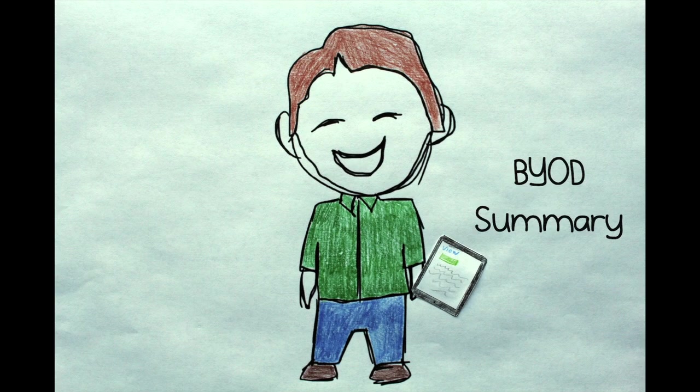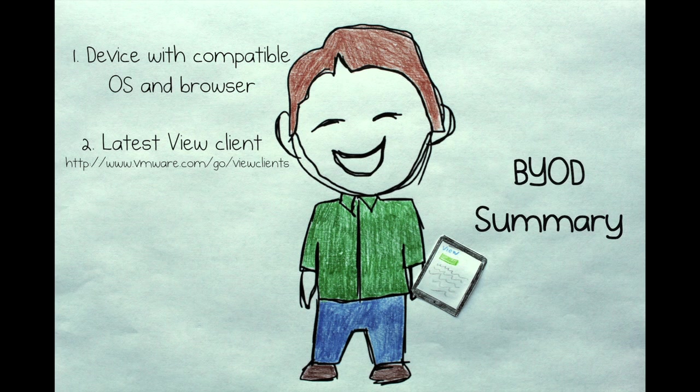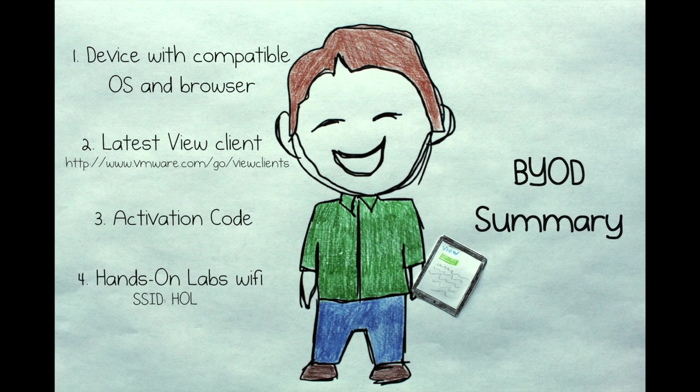To recap, for Bring Your Own Device, you'll need a device with a compatible OS and browser. You should have the most recent VMware View Client installed on your device. You'll need the activation code you get from the seating desk. Connect your device to the hands-on labs Wi-Fi and open a web browser to launch your lab.